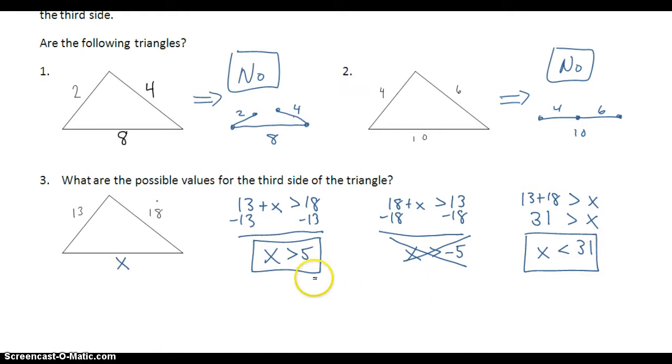So I want to link these two into one big long inequality. Of all of these values, x, 5, and 31, 5 is the smallest value and 31 is the largest value with x being in the middle. And x has to be less than 31 and it has to be greater than 5. So my final answer looks like this. x has to be a value between 5 and 31.